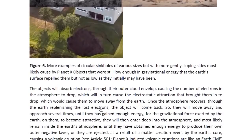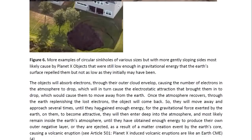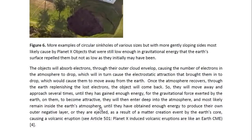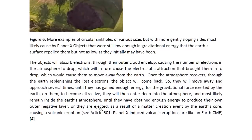The objects will absorb electrons through the outer cloud envelope, causing the number of electrons in the atmosphere to drop, which will in turn cause the electrostatic attraction that brought them in to drop, causing them to move away from the Earth. Once the atmosphere recovers through the Earth replenishing the lost electrons, the object would come back. They will move away and approach several times until they have gained enough energy for the gravitational force exerted by the Earth on them to become attractive. They will then enter deep into the atmosphere and most likely remain inside the Earth's atmosphere until they have obtained enough energy to produce their own outer negative layer.